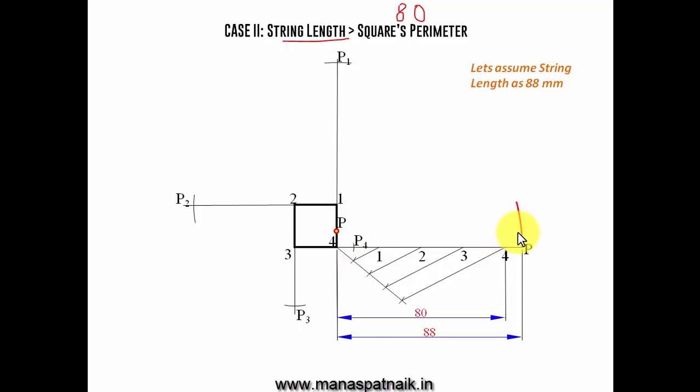When you join all these points in proper sequence, the curve that you're going to have is popularly known as an involute. And in this case, the string length is more than the square's perimeter. So, that was case number 2.